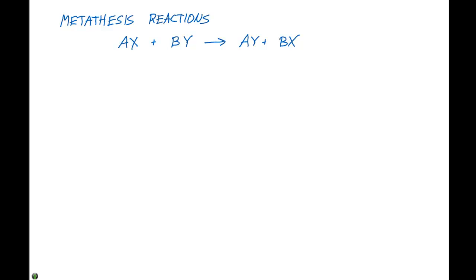And typically we observe this in solutions. So if we wanted to write an example of such a reaction, we could have sodium chromate, which is Na2CrO4 in aqueous solution, plus two silver nitrate, which is AgNO3, also in aqueous solution.